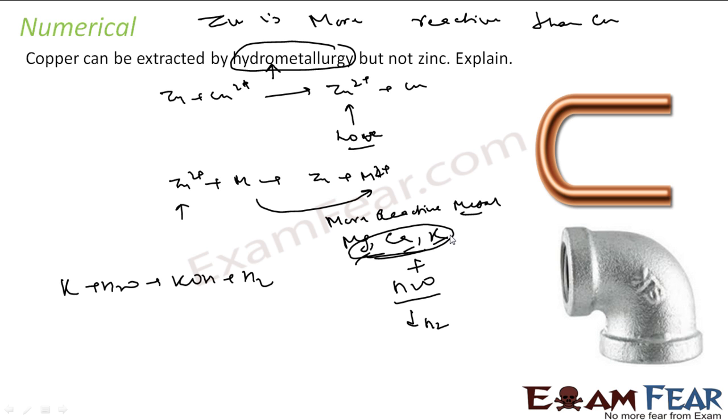Thus, copper can be extracted using hydrometallurgy because copper can be extracted using zinc.